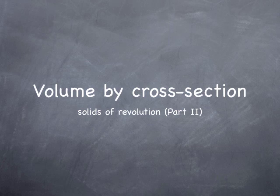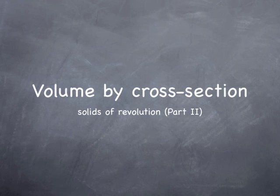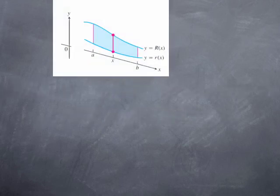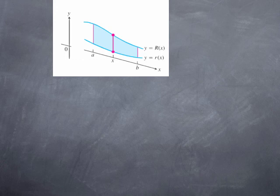In the previous video we applied the method of calculating volumes by cross-section where the cross-section was a disk. In this video we're going to look at a slightly more general case. Instead of taking the area under the graph of a function bounded below by the x-axis and above by the graph of a function and rotating about that horizontal line, we're going to look at the case where we take a plane region that doesn't touch the axis of revolution.